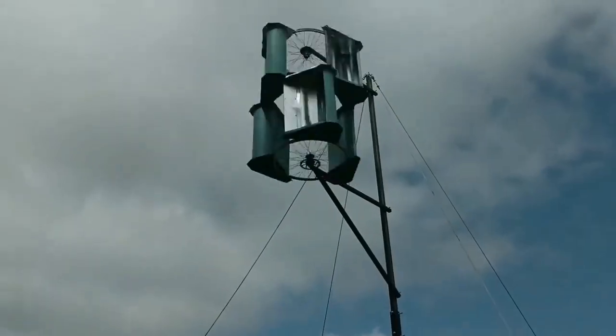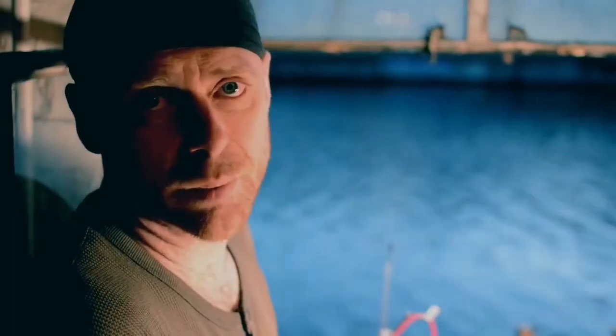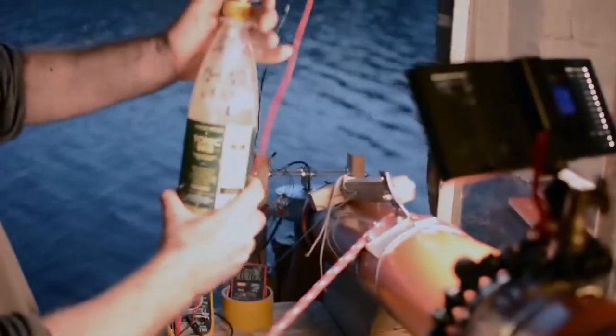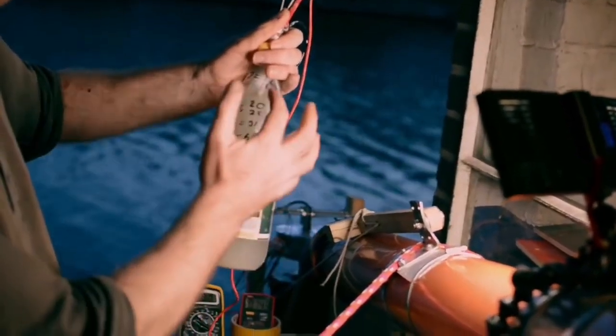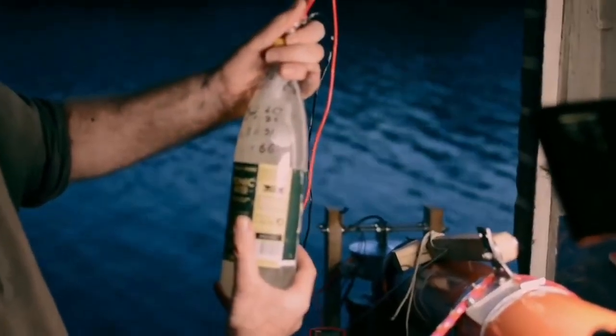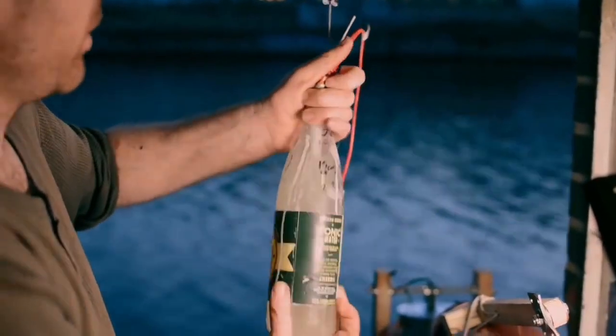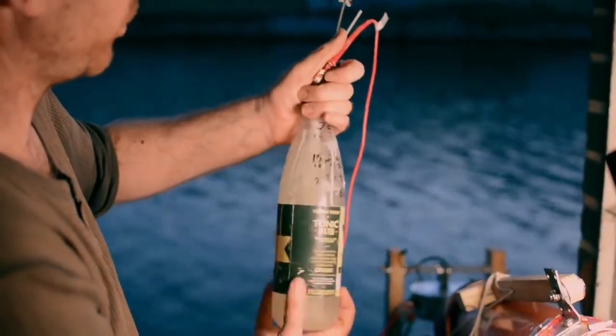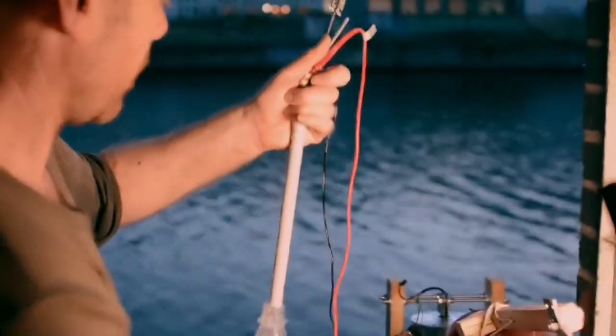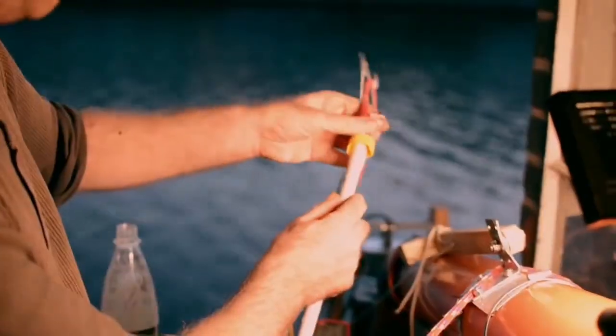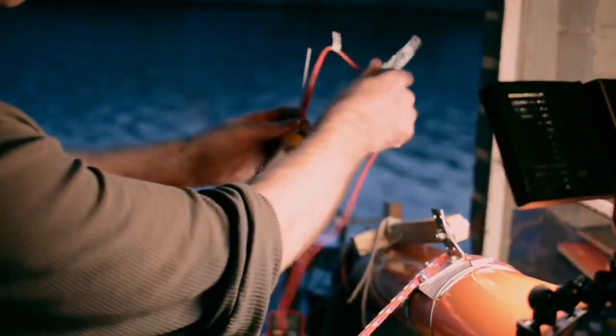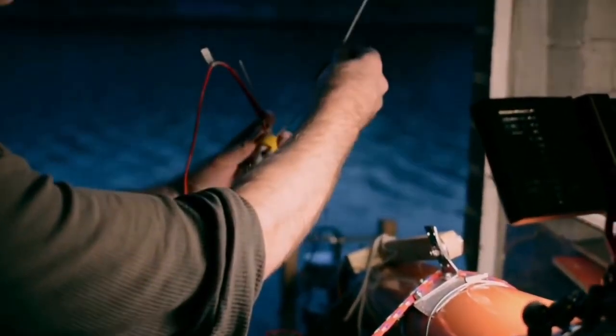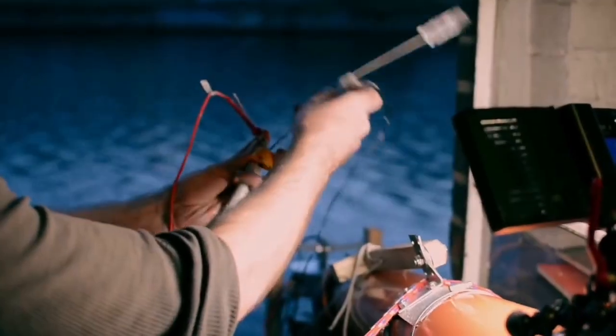The liquid rheostat is just a plastic bottle with a water and washing soda mix, and then two stainless steel cable electrodes basically. One of which just stays all the way in the water and the other one I can pull in and out to set the load.